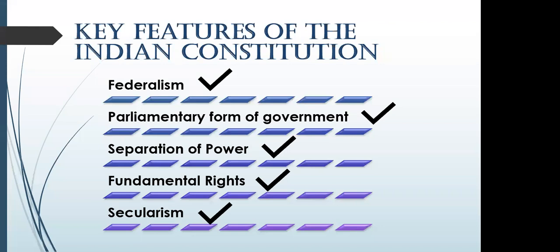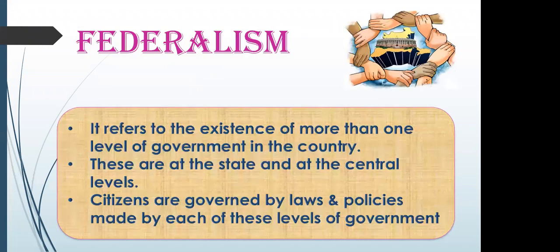First of all, federalism. Federalism is basically the division of power between different levels of government. For example, power is divided between the central government, state government, and local government. When we divide power into different levels of government, that is known as federalism.